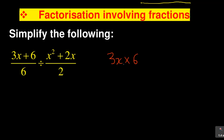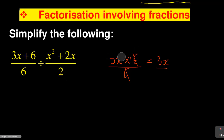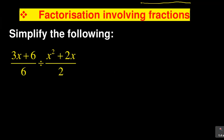The only time you are allowed to cancel like that is when the problem changes to a multiplication sign. For example, if it becomes 3x times 6 over 6, then you can cancel to correctly get 3x. As long as there is a plus sign or a minus sign between terms, do not be tempted to cancel.